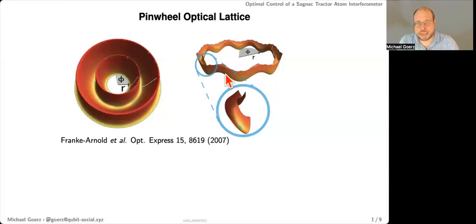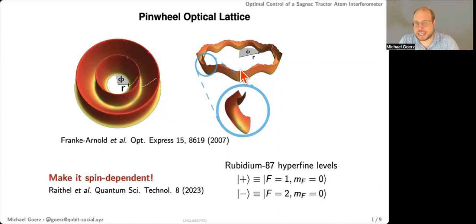But more importantly, by changing the phase between the Gauss-Laguerre modes, you can rotate this potential any way you like. And then in addition to that, we can also make that spin-dependent. So you can take your rubidium atom with two hyperfine states, and then you'll have two traps, one for each of the spin states for the hyperfine states. And you can move these around independently.